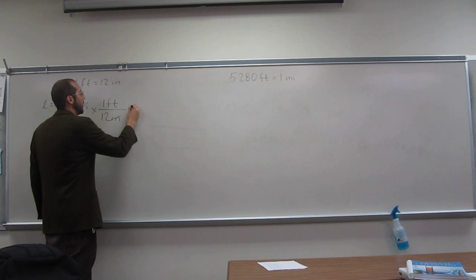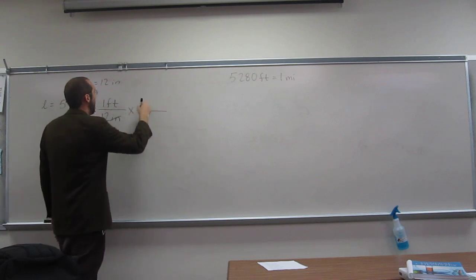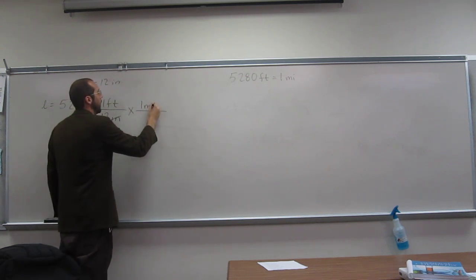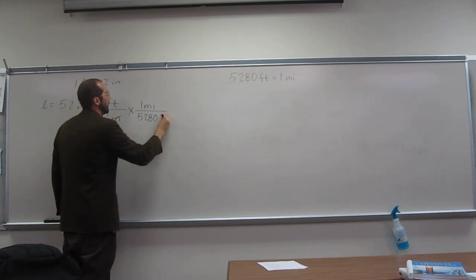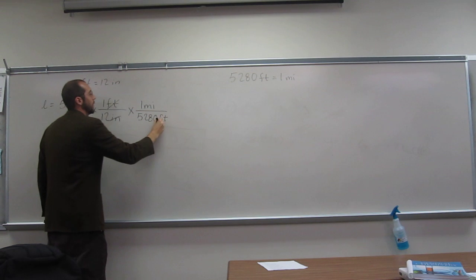So what do I have to multiply this by? One mile at the top. And at the bottom? 5,280. Cancel, cancel.